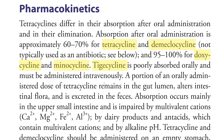When you take tetracyclines, they differ in their absorption and elimination. Tetracycline and demeclocycline are absorbed up to 60 to 70% after oral administration. Doxycycline and minocycline, on the other hand, are absorbed up to 95 to 100% after being taken orally. You can remember these two by having an 'O' in their initial alphabet.